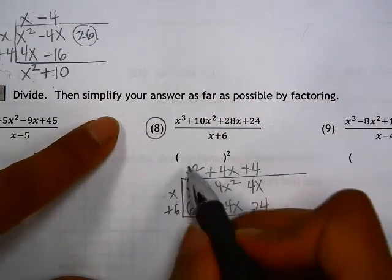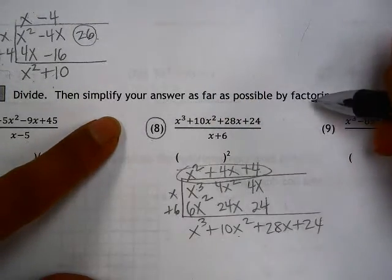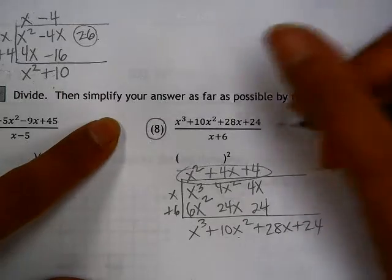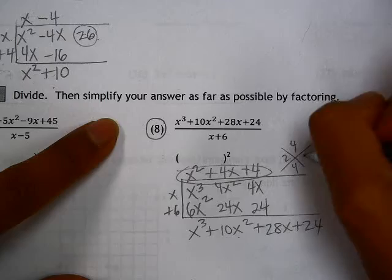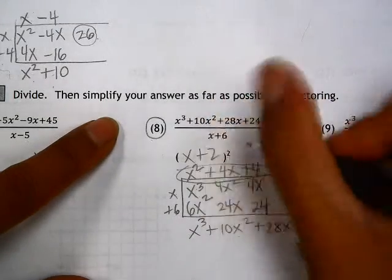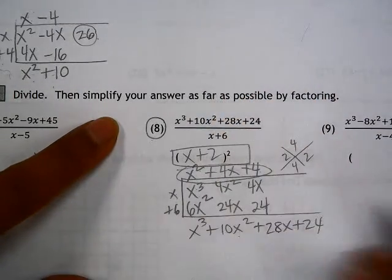x² + 4x + 4 is our quotient. But we need to factor it so we can write it in factored form. The factors of x² + 4x + 4 are (x + 2)(x + 2), or (x + 2)².